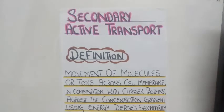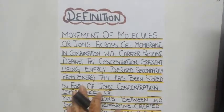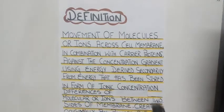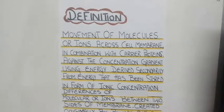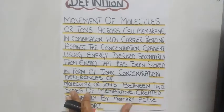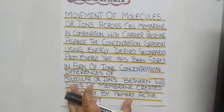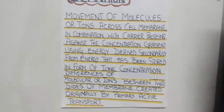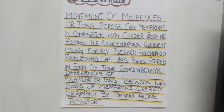Secondary active transport is defined as the movement of molecules and ions across the cell membrane in combination with carrier proteins, against the concentration gradient, using energy derived secondarily from energy that has been stored in the form of ionic concentration difference or potential difference of the molecules or ions between two sides of the membrane, created originally by the primary active transport.